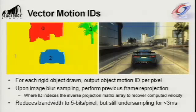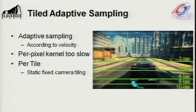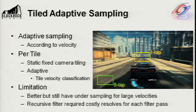This reduces our bandwidth requirement to 5 bits per pixel, allowing for 32 motions within the scene, but we still get under-sampling artifacts for less than 3 milliseconds processing time. We apply adaptive sampling according to velocity across the screen. We can't do this per-pixel with dynamic branching because current console hardware is too slow. With our racing camera angle, we can apply a static fixed camera-based tiling with a variable number of taps according to the general velocities in that area. We can go further with screen space tile classification of velocities to apply an adaptive filter for regions of high velocity.